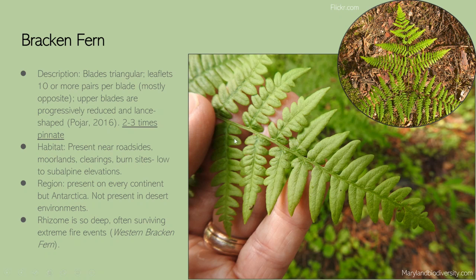The upper blades of bracken fern are progressively reduced and more lance-shaped, while the lower blades have more of a rounded edge on the pinnules. You'll commonly find them on roadsides, clearings, burn sites, and anywhere within low to subalpine elevations. These are one of the most widely spread ferns — you can find them on any continent but Antarctica, and they typically don't like growing in deserts either. The rhizome is so deep that they often survive extreme fire events.